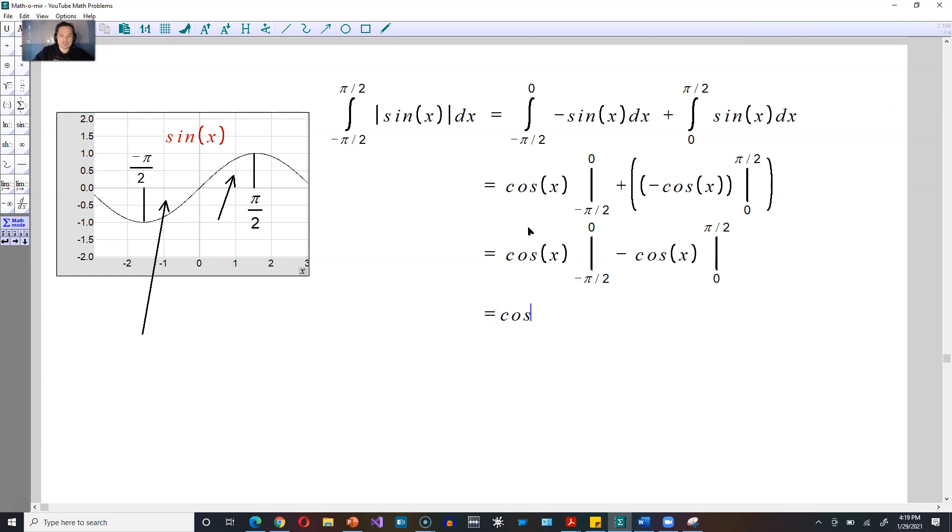Then you can plug in the upper and lower limits. So it's going to be cosine of 0 minus cosine of negative π/2 minus, and then be very careful, put brackets and then evaluate cosine of π/2 minus cosine of 0.